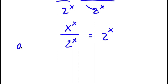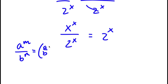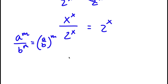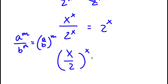If I have something in the form a to the power of m over b to the power of m, this is equal to a over b to the power of m. So this is equal to x over 2 to the power of x, which is equal to 2 to the power of x.